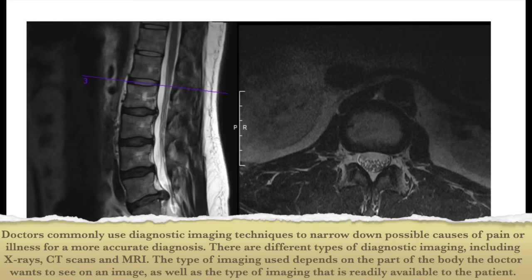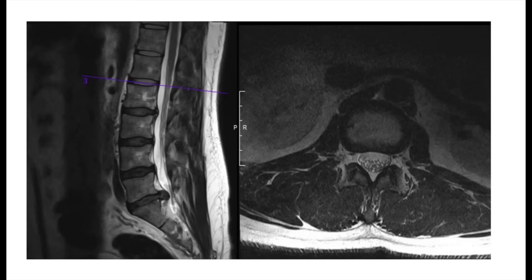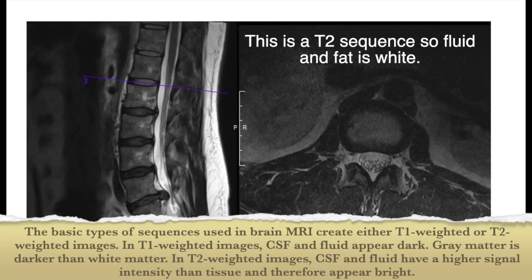An MRI is an imaging modality that we use to evaluate structures within the body. If we need to evaluate bones or different bony anatomy, we use an x-ray or a CT scan. MRI uses a strong magnetic field with a series of radio frequency waves to render different contents within the body. There are different sequences that we can look at on an MRI scan — there's a T1 weighted sequence and there's a T2 weighted sequence. The different images will appear brighter or darker depending on which sequence you use and which structures you're looking at.